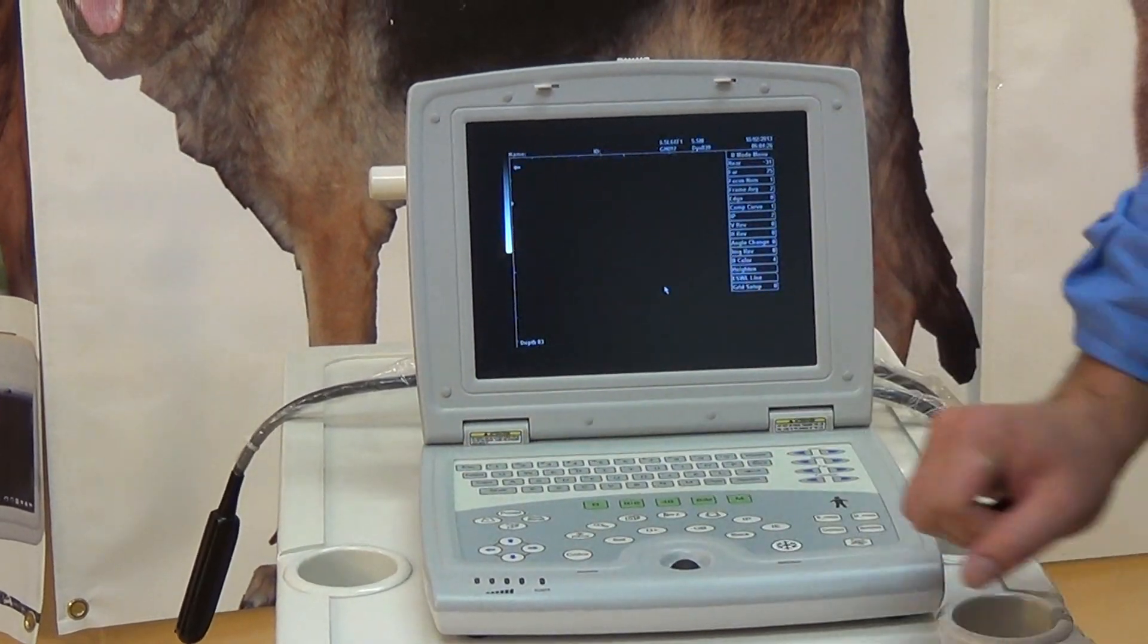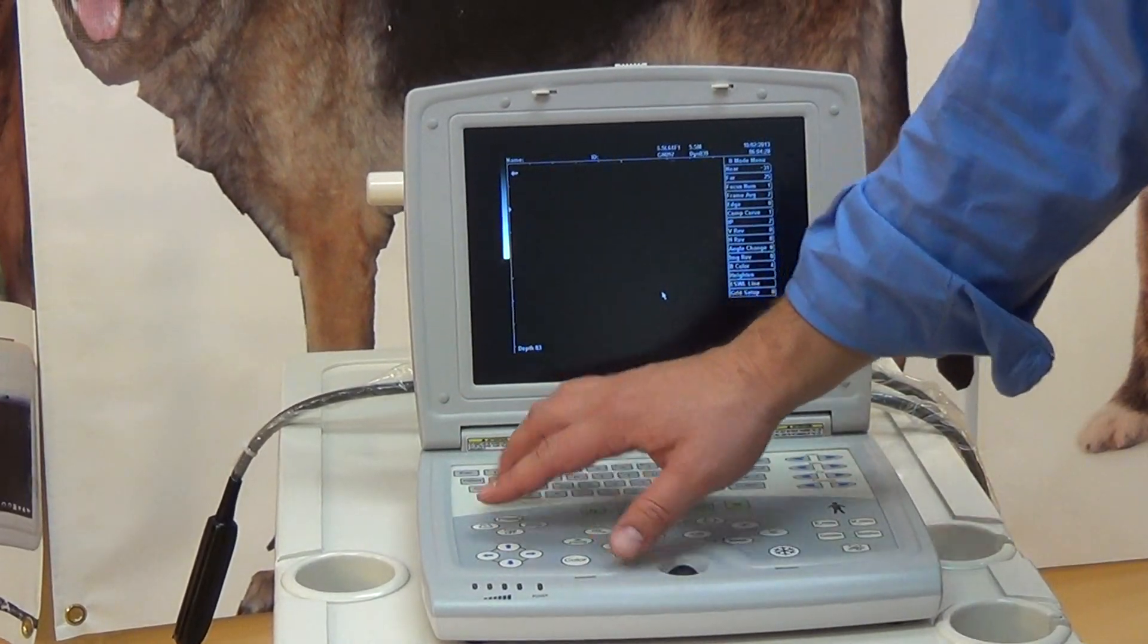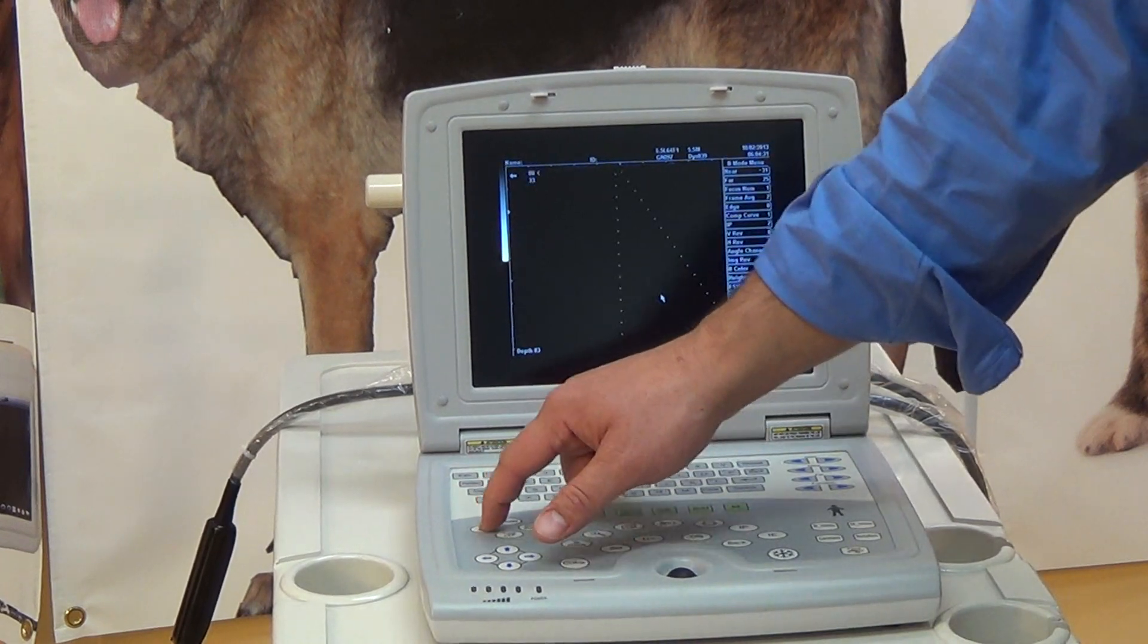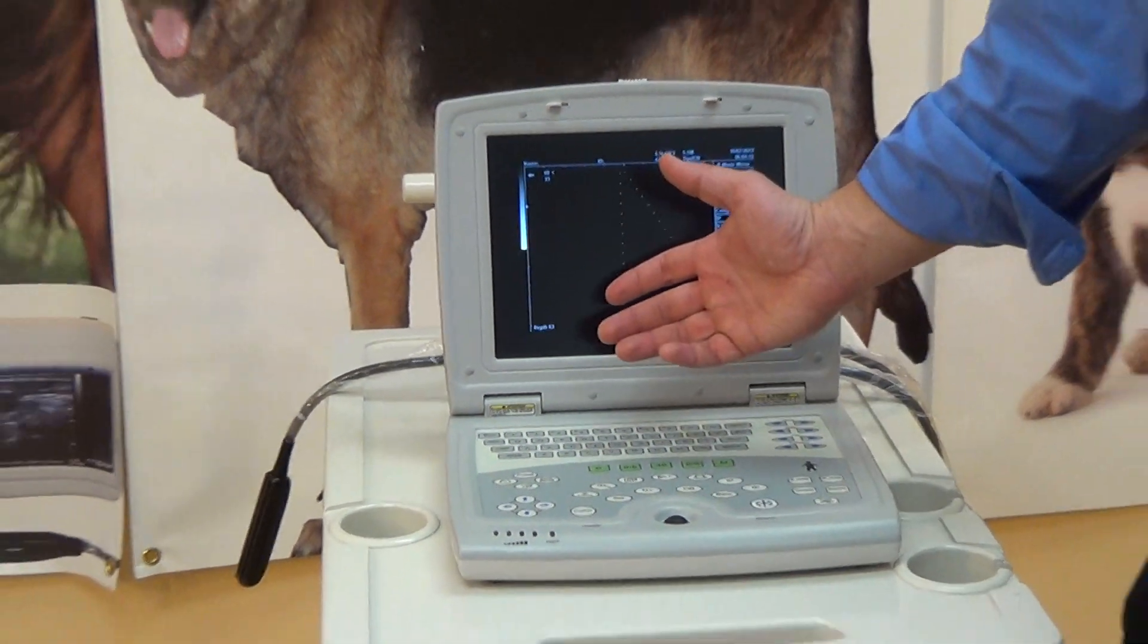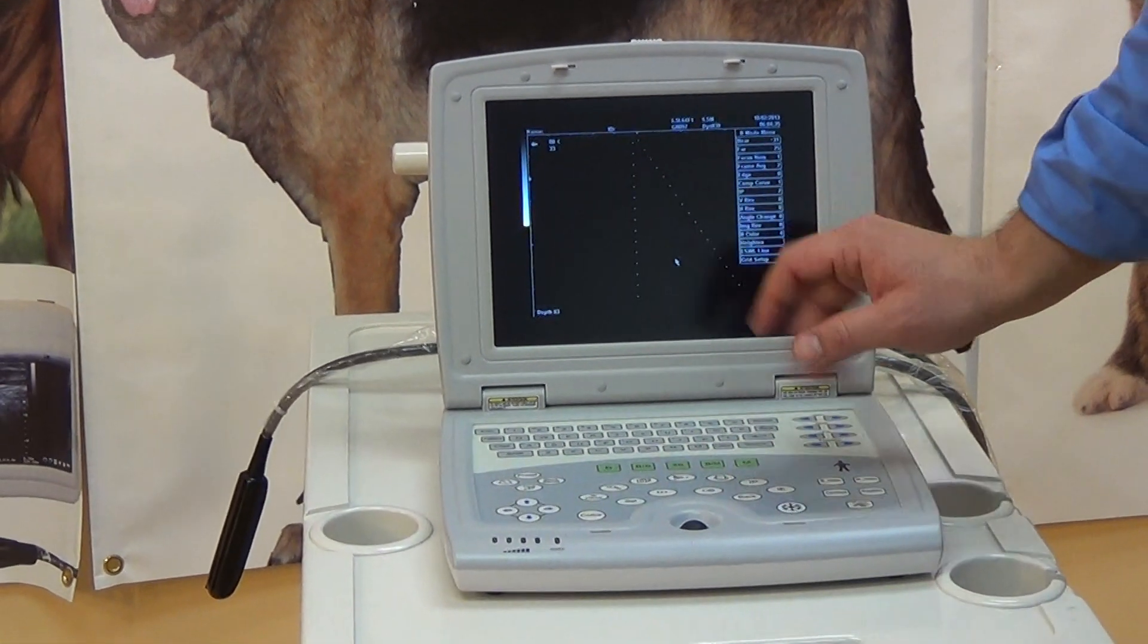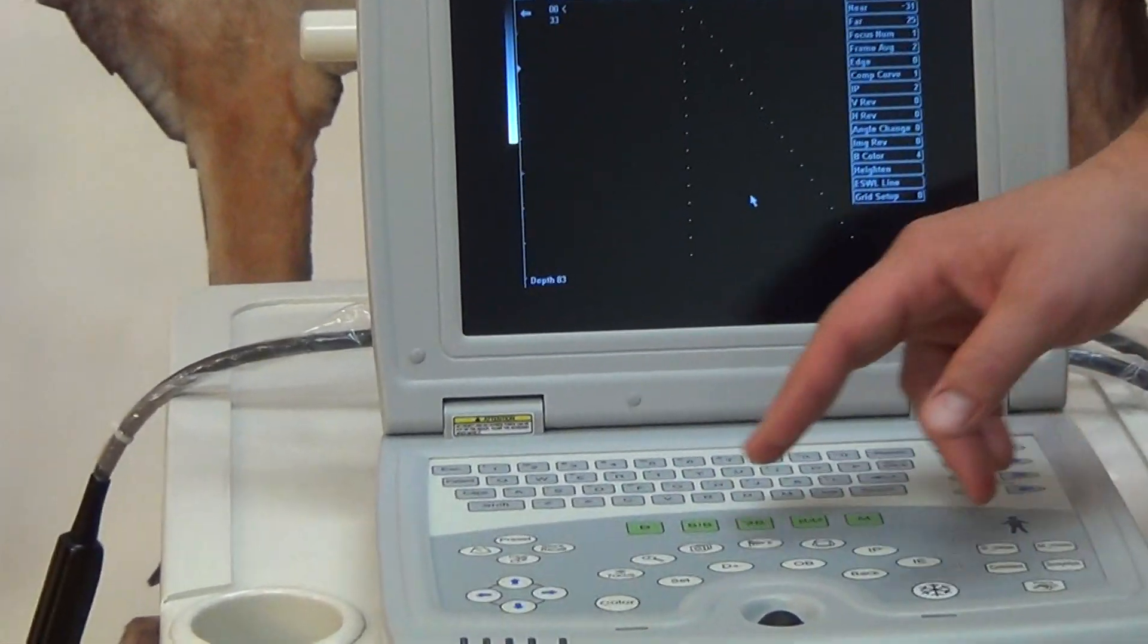And then we have our start on the left side and move across. This button over here is if you're doing a biopsy, you have some sort of needle-guided procedure. Not very many people use that, but sometimes veterinarians, it's possible.